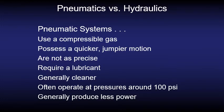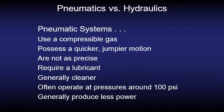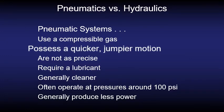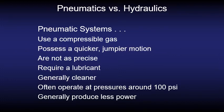Let's take a look at pneumatic systems compared to hydraulic systems. Pneumatic systems use a compressible gas which is generally air which is easy to obtain and there's no disposal issues. They also possess a quicker jumpier motion which is great for fast repeated jobs like a nail gun.